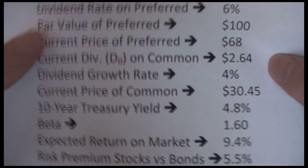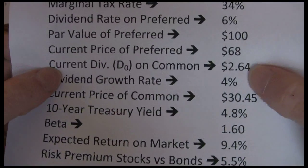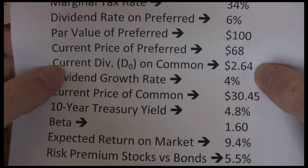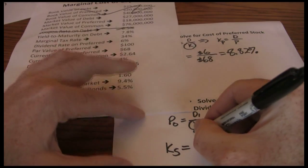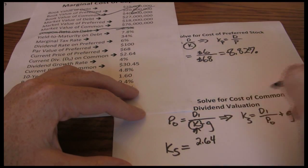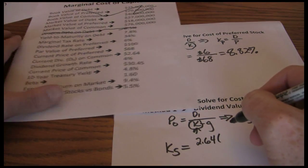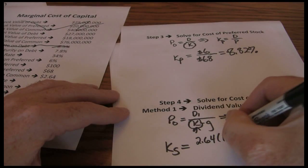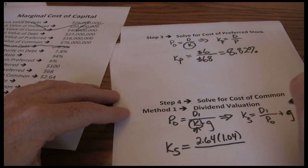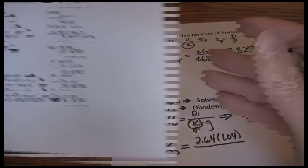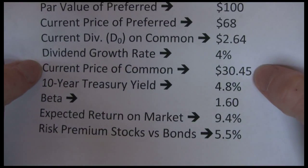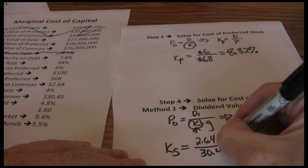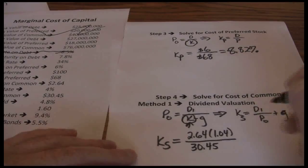D1, if we look at our example, we're given D0 not D1 so we're going to have to forecast that. So D1 is going to be $2.64 times 1 plus the growth rate and our growth rate is 4%. The price of common stock is $30.45. Be careful that you get the price of common stock and not the price of preferred there.